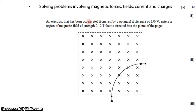In this question, we have an electron that's been accelerated from rest by a potential difference of 250 volts. It enters a region of magnetic field with a strength of 0.12 tesla that's directed into the plane of the page, and we know that from these crosses. Crosses represent into the page, dots represent out.